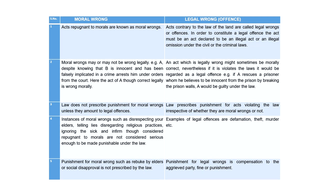Law does not punish for morally wrong actions unless they also amount to legal offenses. Whereas law prescribes punishment for acts violating the law irrespective of whether they are morally wrong or not. Examples of moral wrongs include disrespecting your elders, telling lies, not performing religious practices your parents expect, or ignoring a sick and infirm person who needs your help. These are actions repugnant to morals — they are all moral wrongs — but you cannot say they are legal wrongs, unless there was a legal obligation on you.